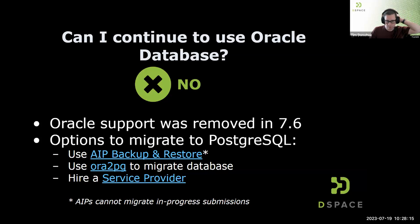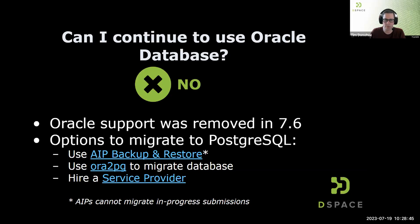Oracle support was removed in 7.6. We now require that you run on Postgres. There are tips for how to migrate to Postgres if you're still on Oracle. At least one institution used the Ora2PG tool for migration; others have used AIP backup and restore, which also works except for in-progress submissions. If you need help, ask on the lists or contact service providers who can help with this migration.